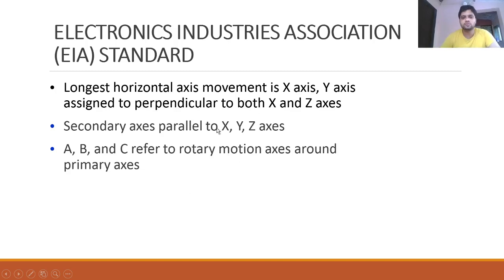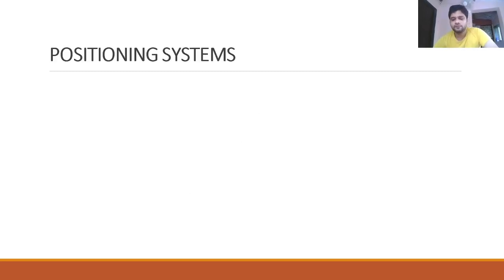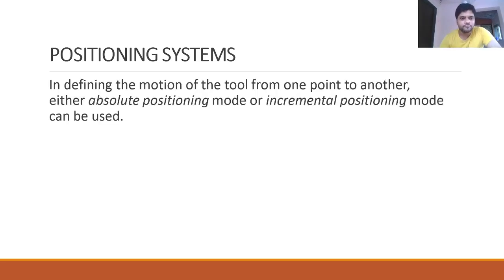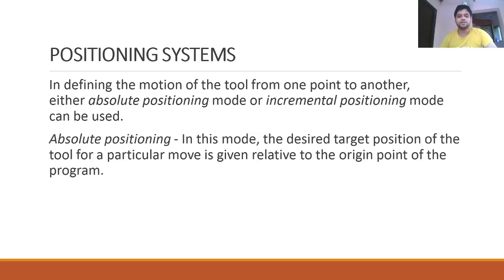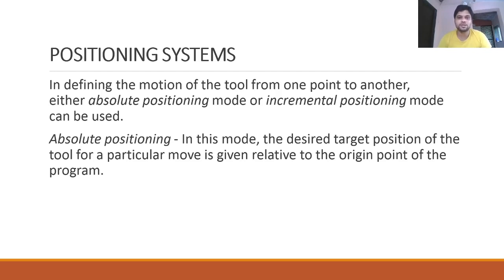Two positioning systems are available for CNC: absolute positioning and incremental positioning. In absolute positioning, the coordinate system has a fixed origin and all dimensions are given relative to that fixed origin — these are absolute dimensions. The desired target position for each tool move is given relative to the program origin.